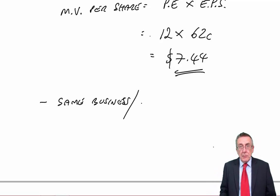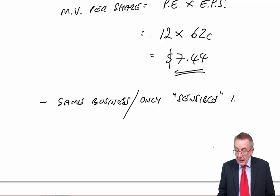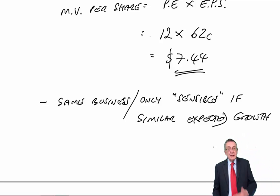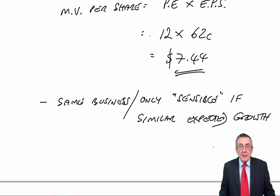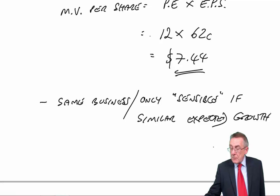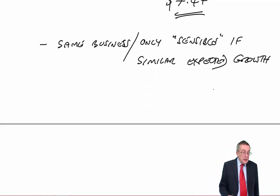The real big problem here is it's only sensible if there's similar expected growth. You can put it another way. You see, the PE takes no account of growth directly. It takes current market value, current earnings. The more growth potential there is in a business, the more the market value will be. And that's the big problem. When you're using similar companies, I say again, they need to be in the same sort of business, that's fine. But just because they're in the same business doesn't mean that we've got similar expectations of growth. That's the big problem. And that alone would get me most of the marks.